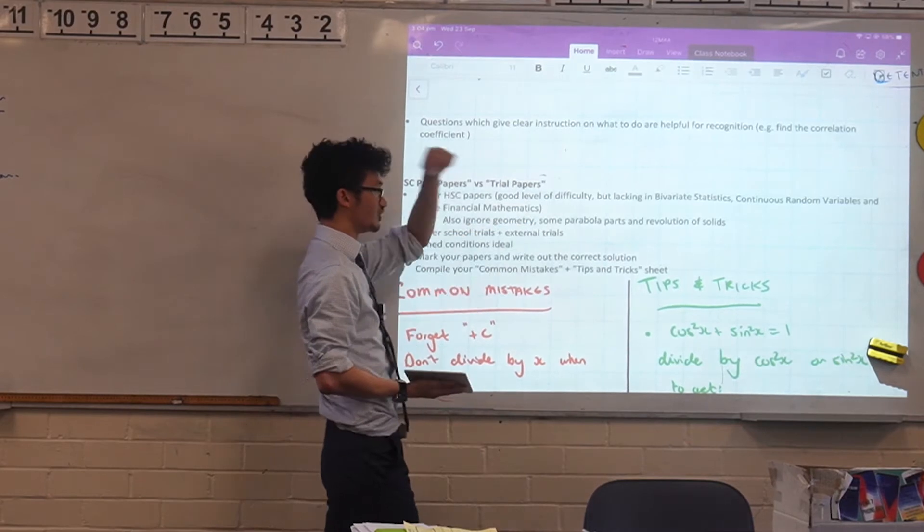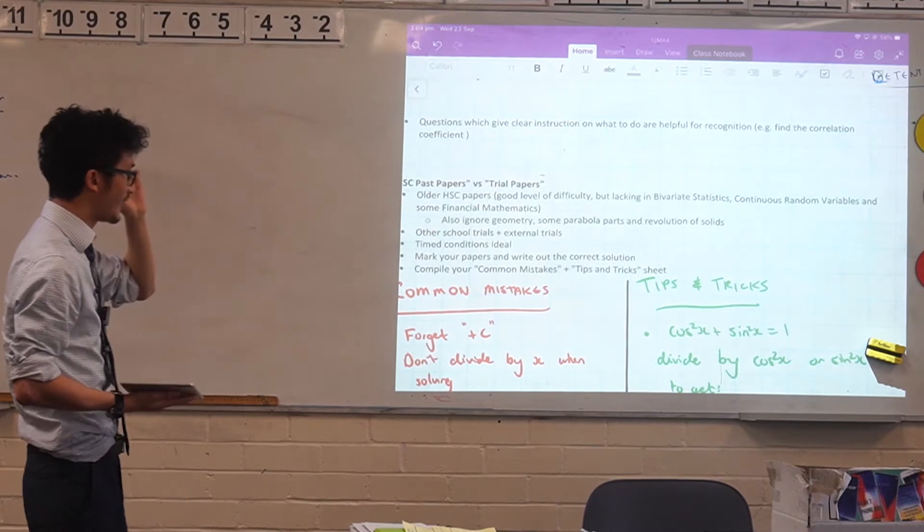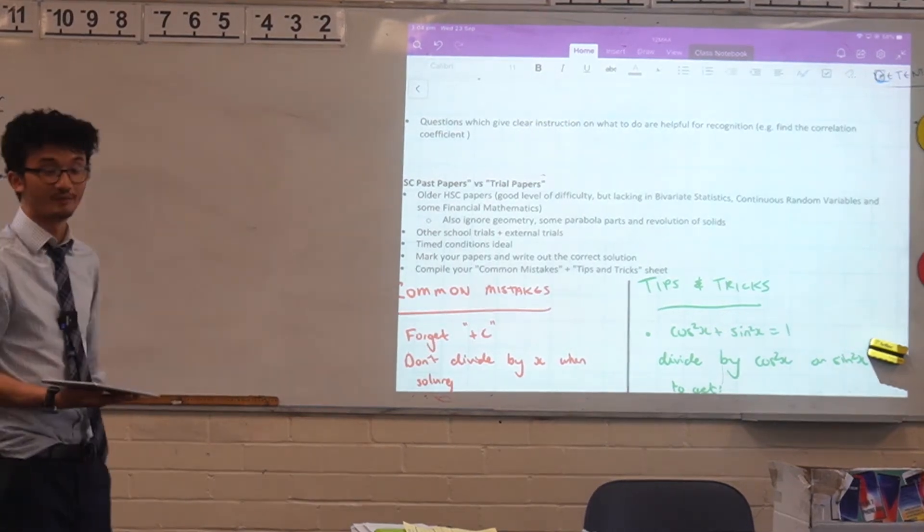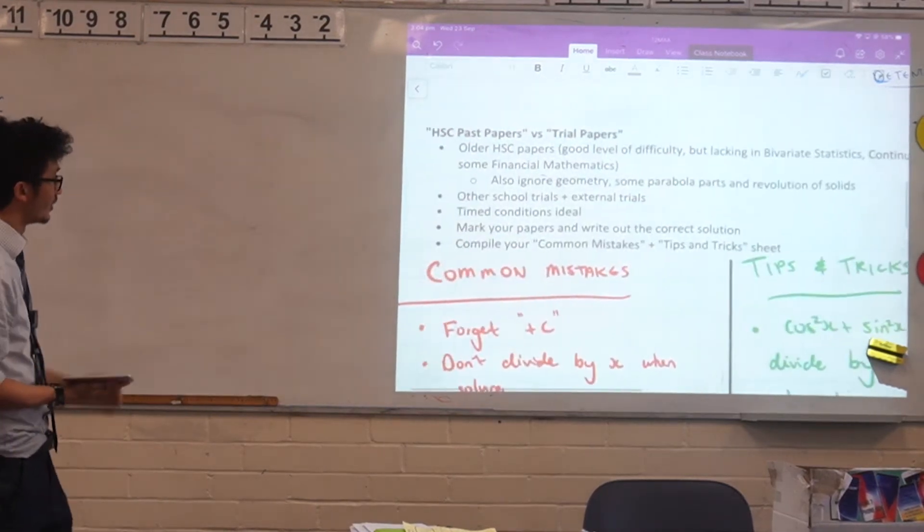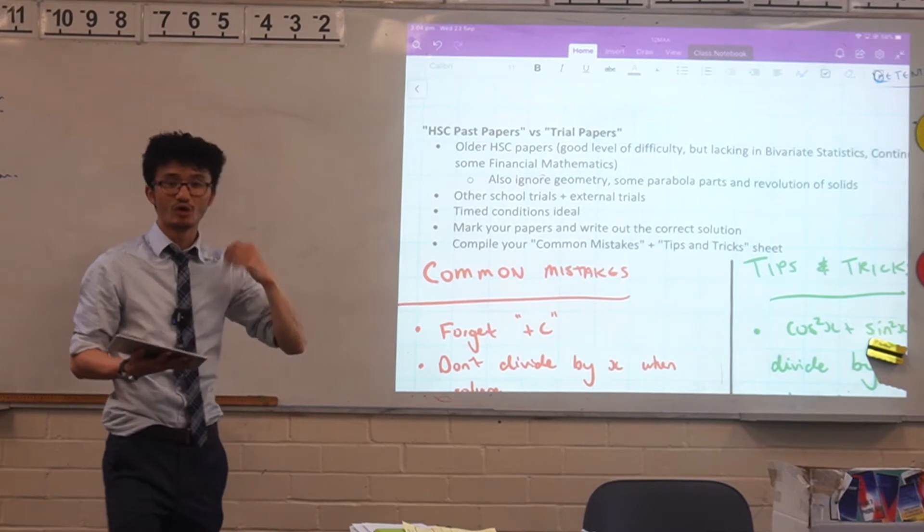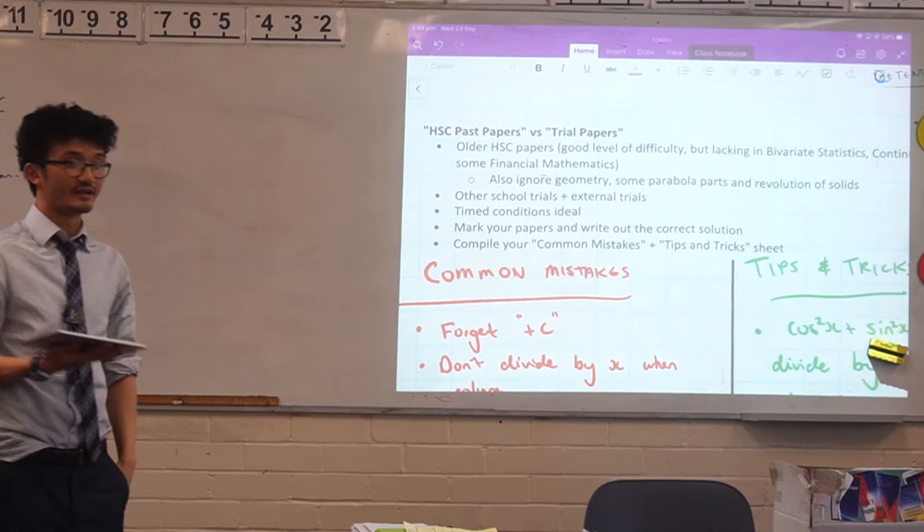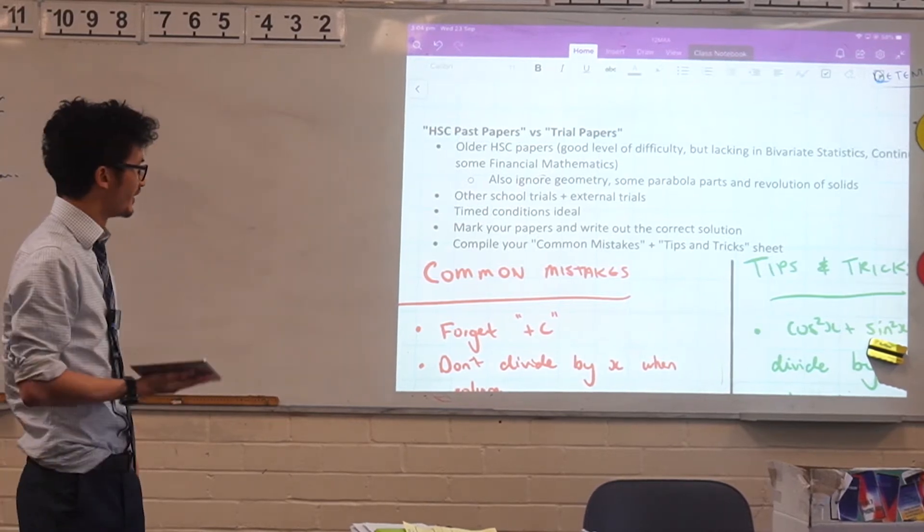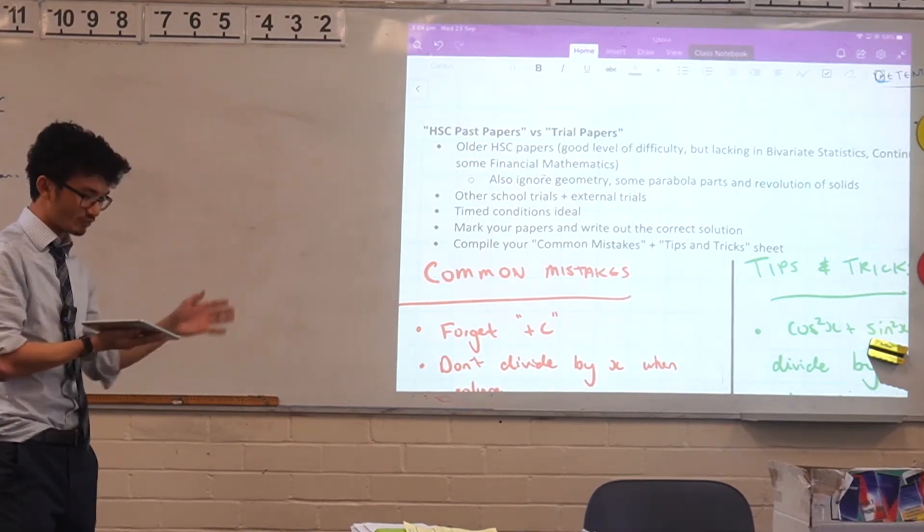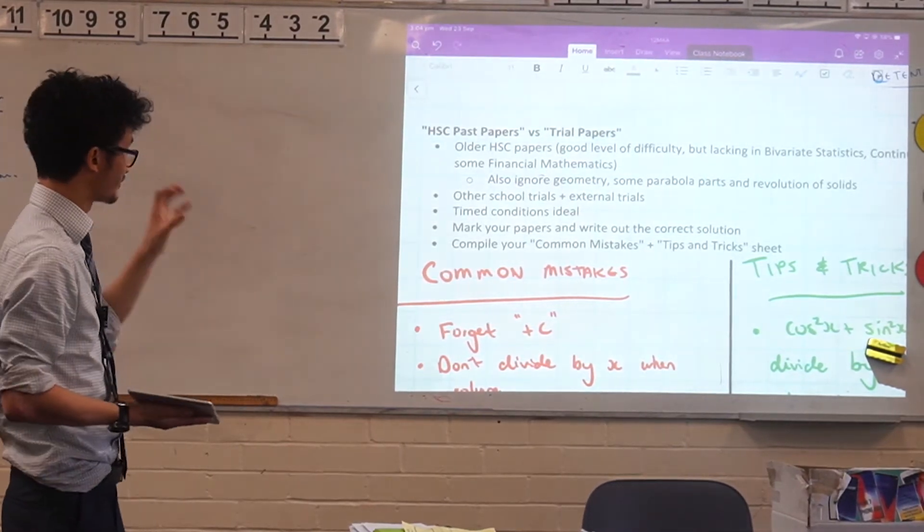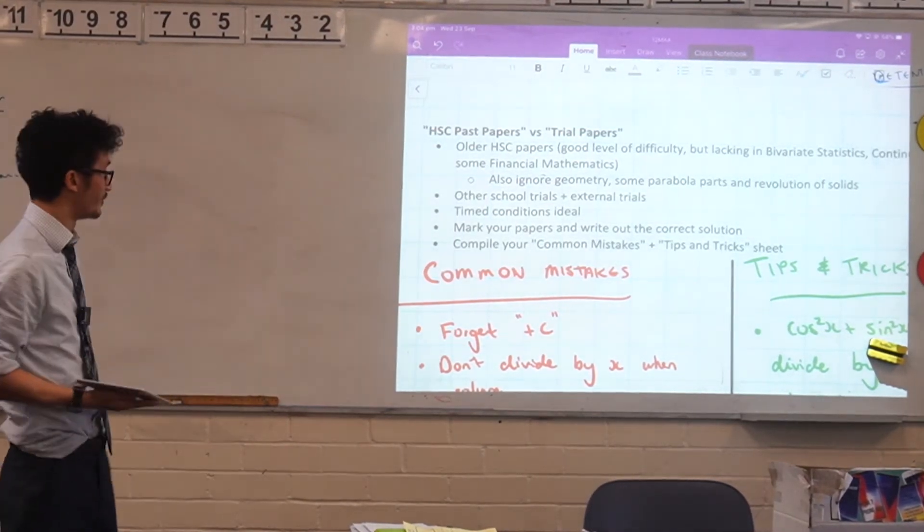Also, if you're looking at HSC papers, ignore any geometry or some of the parabola and revolution of solids questions there. So if you can get your hand on other school trials, if you know anyone, then that's a really good way to do it. Timed conditions are ideal. So you want to be practising, you want to know what three hours feels like. Three hours is a long time to be studying for an exam and doing an exam. So that's why you actually want to know what that feels like. It may not be feasible all the time, but even if you can break up an hour here and there and you do that a few times, that's like getting you comfortable with that amount of time in completing one paper.